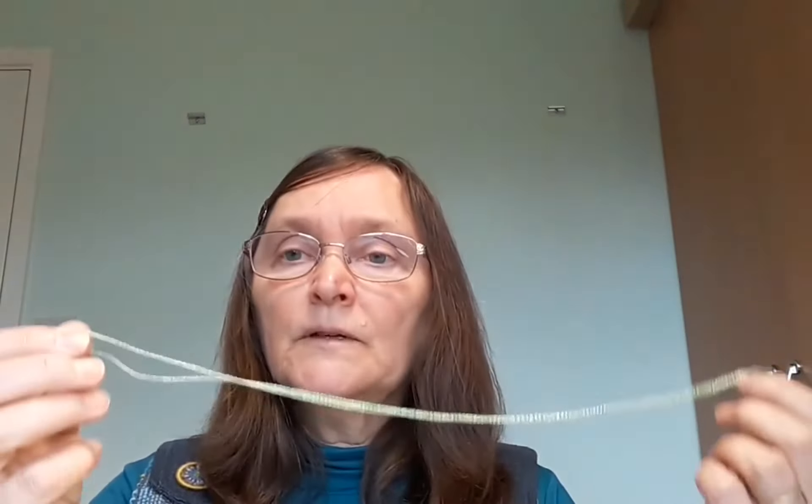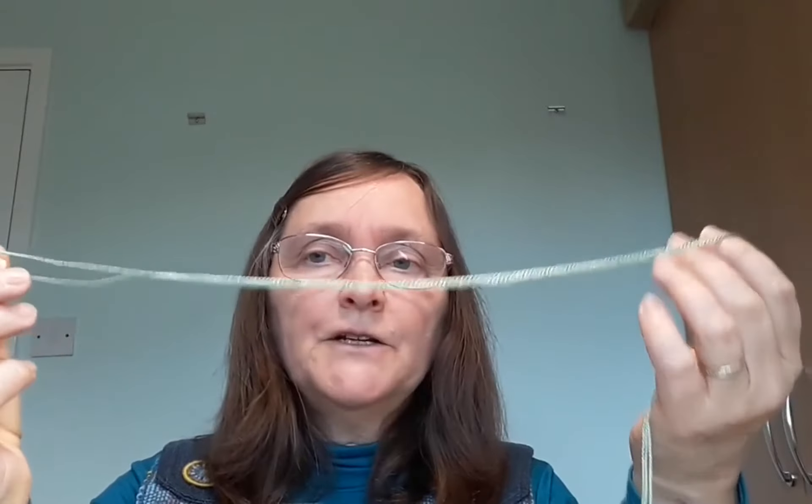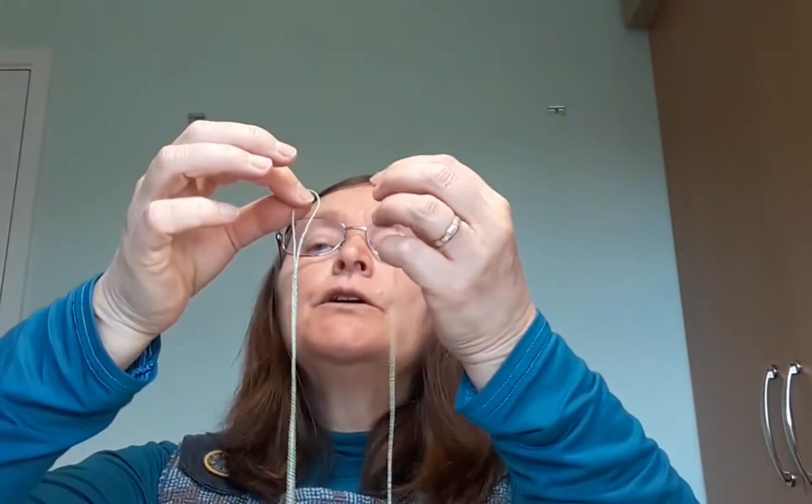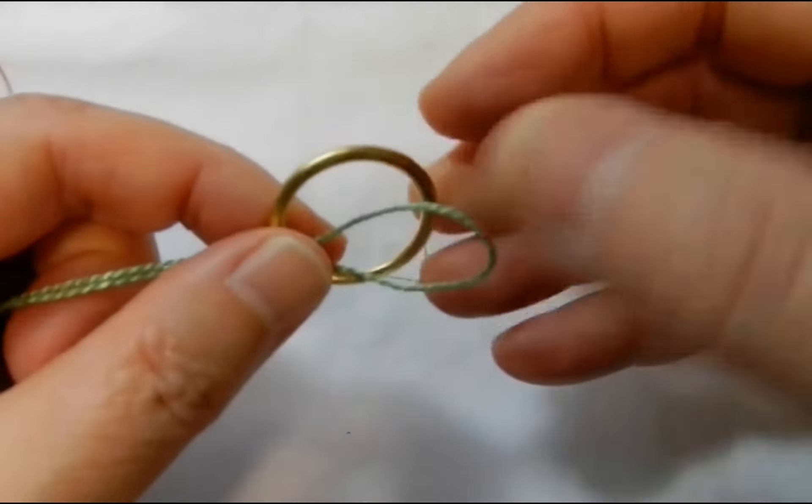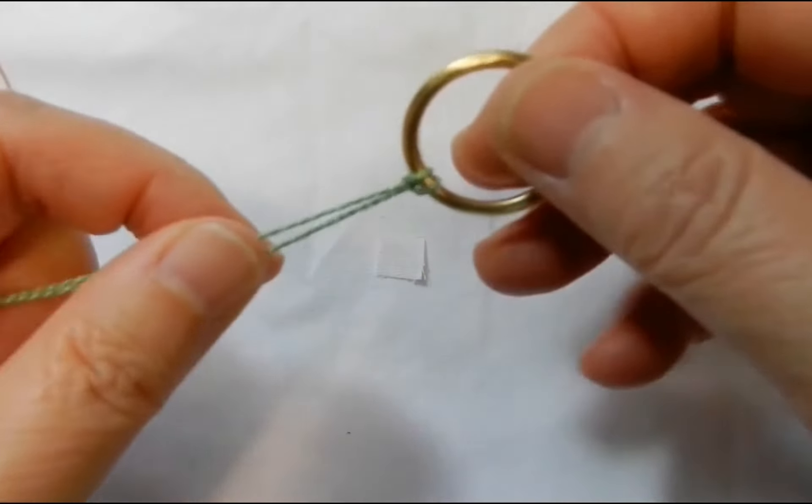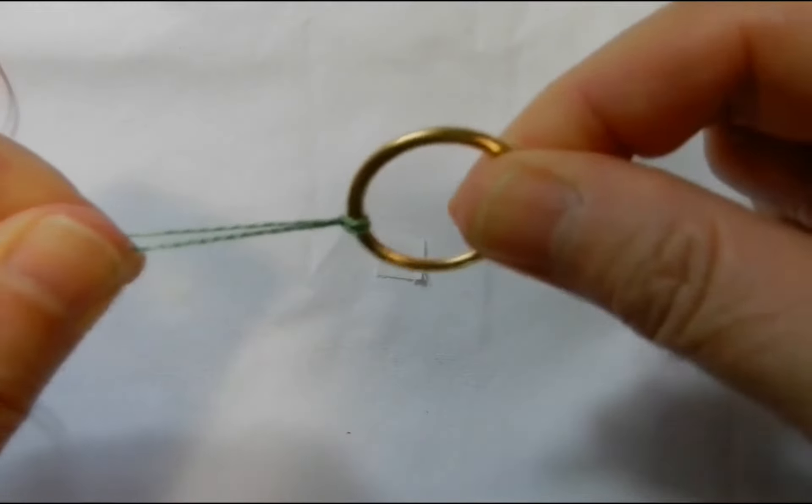We're going to start with the green thread. Find a point about a third of the way along and form a loop. Slip the loop through the ring, pull it round the back, and pull it tight.